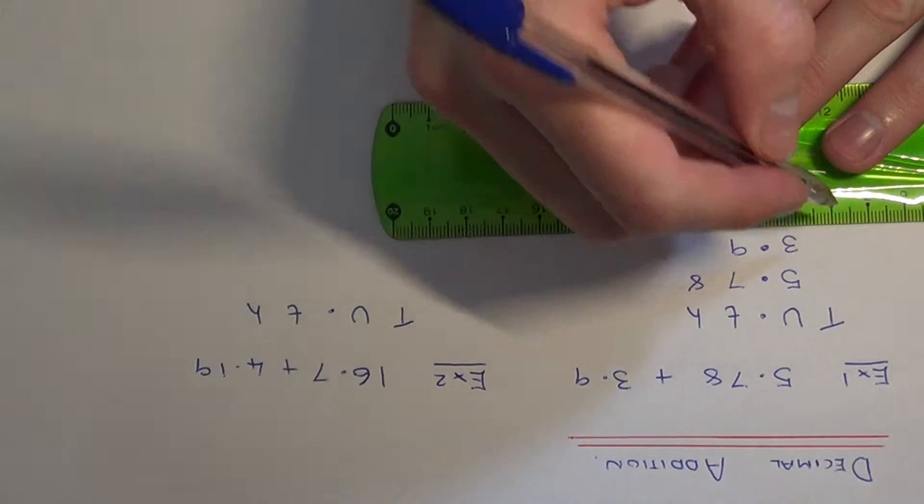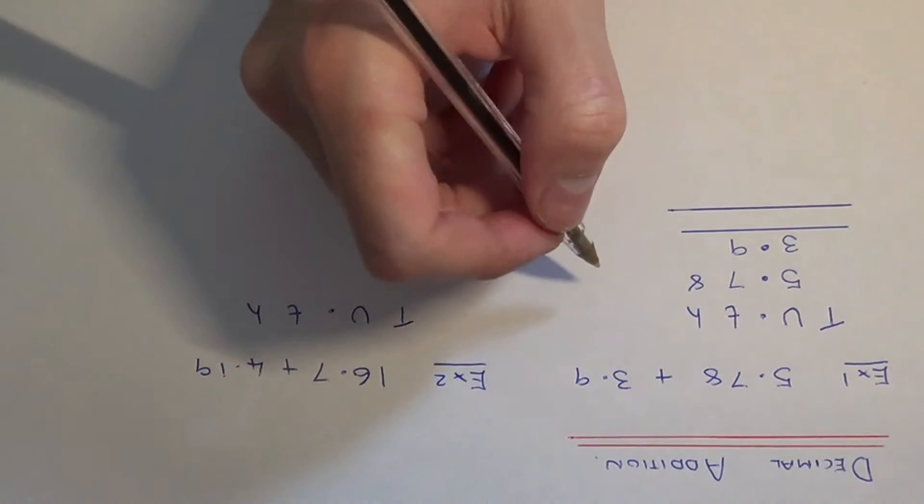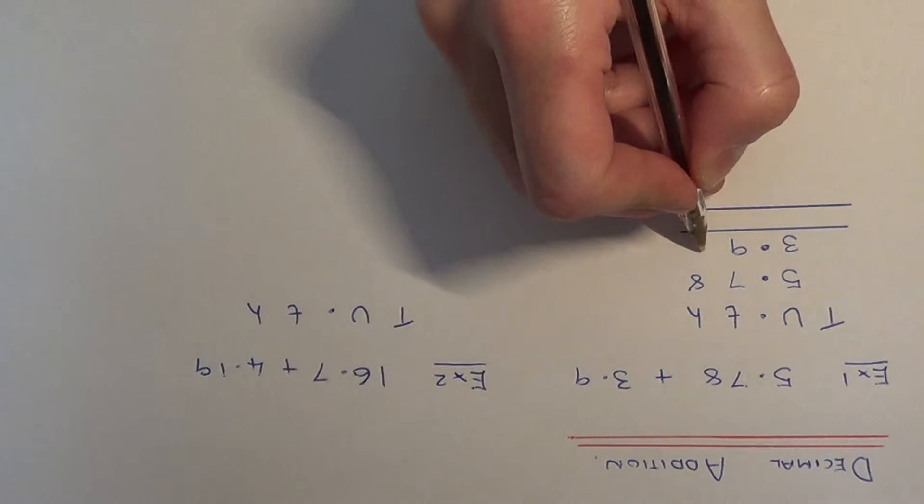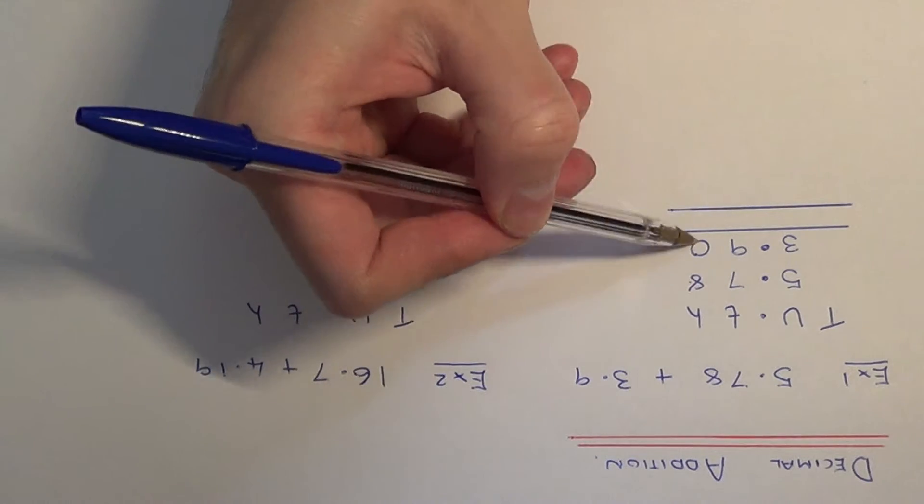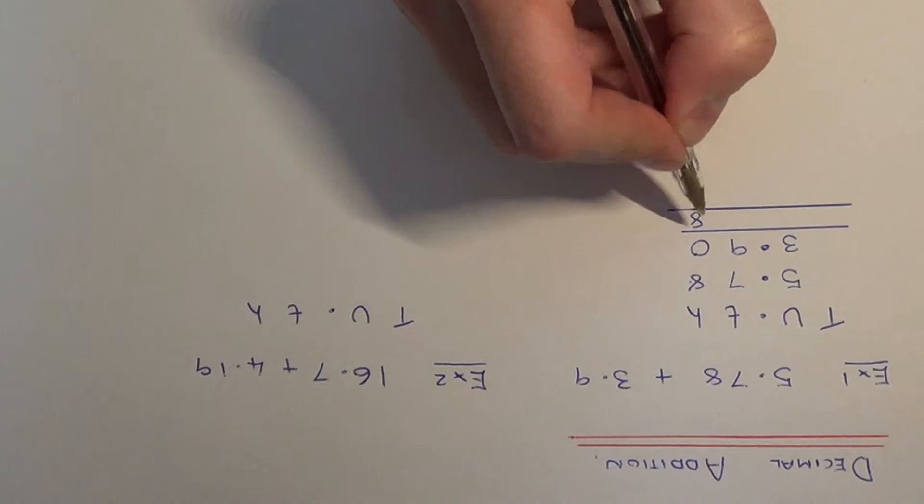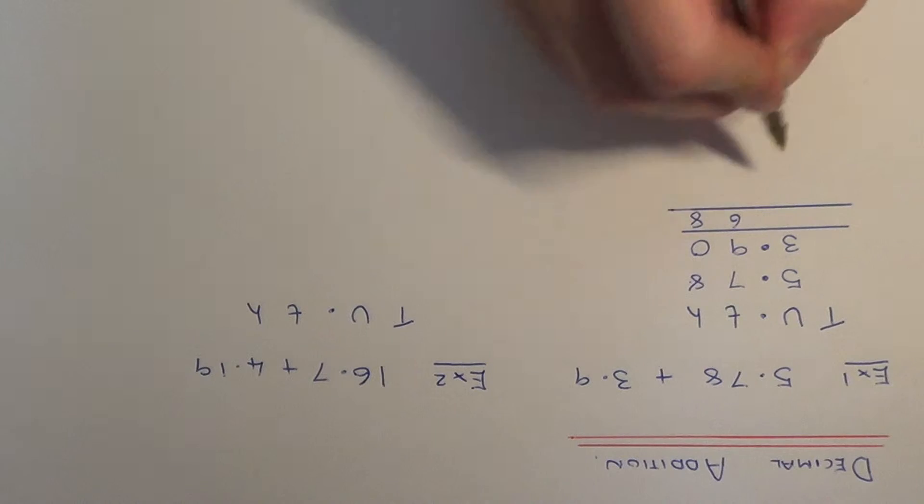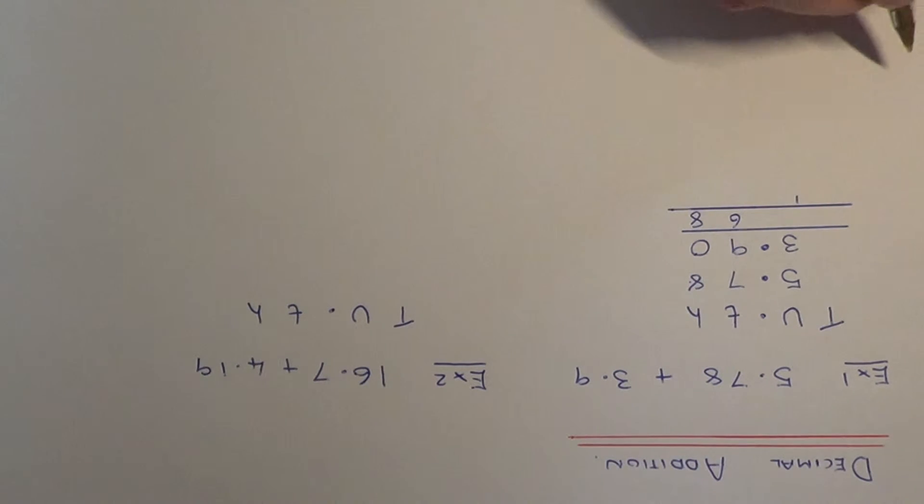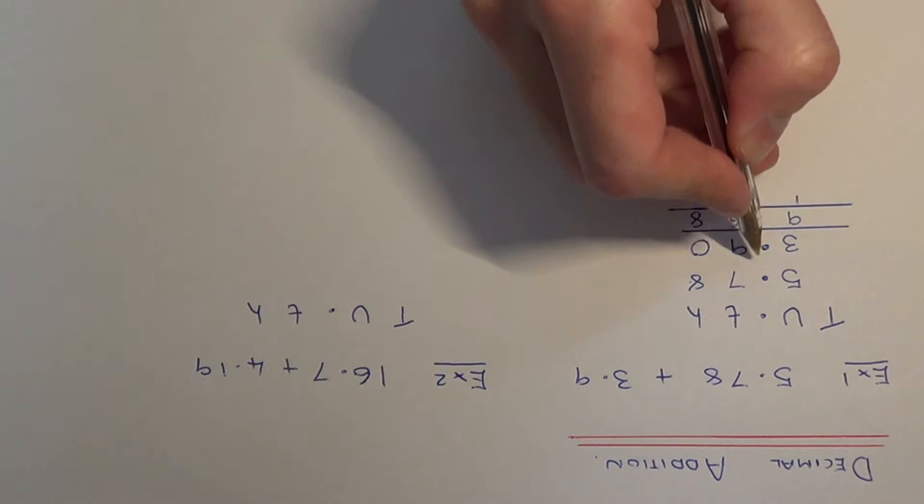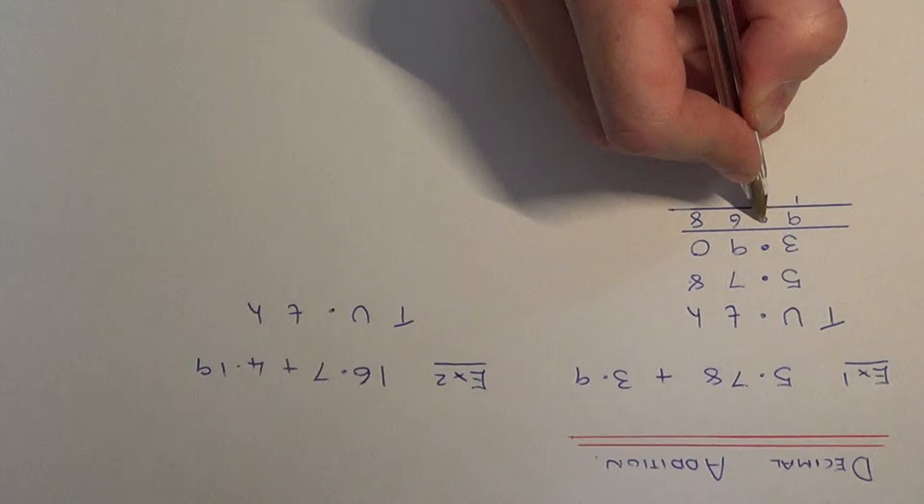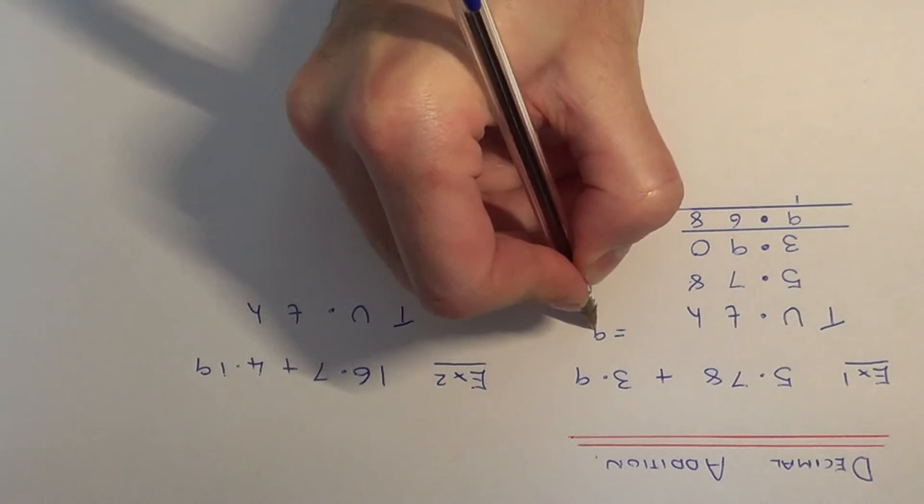Now we just need to add together the numbers in each column. You might want to fill in a zero in this column here because there's 0 hundredths. Let's start at the end. 8 add 0 is 8, 9 add 7 is 16, so I put the 6 on the answer line, carry the 1 underneath. 5 add 3 is 8, plus the 1 is 9. Keep the decimal point in line in your answer. Our final answer is 9.68.